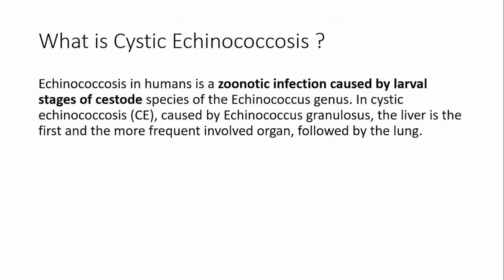What is cystic echinococcus? By definition, echinococcus in humans is a zoonotic infection caused by the larval stage of cystoid species of the echinococcus genus. In cystic echinococcus, CE, caused by echinococcus granulosis, the liver is the first and most frequently involved organ, followed by the lung.